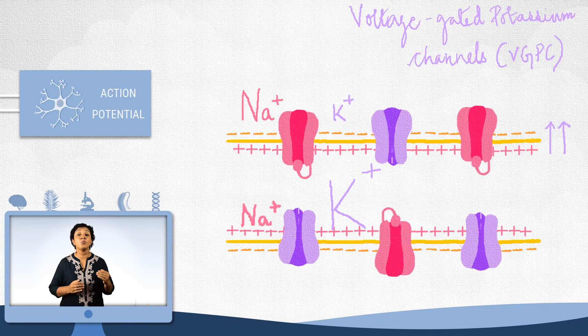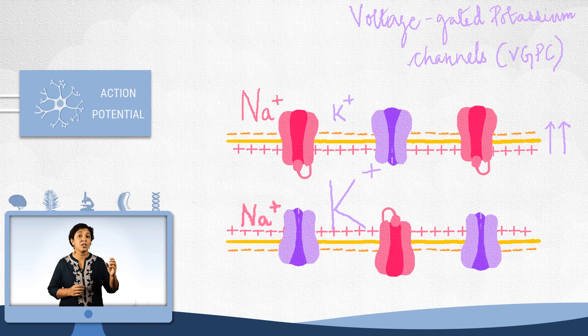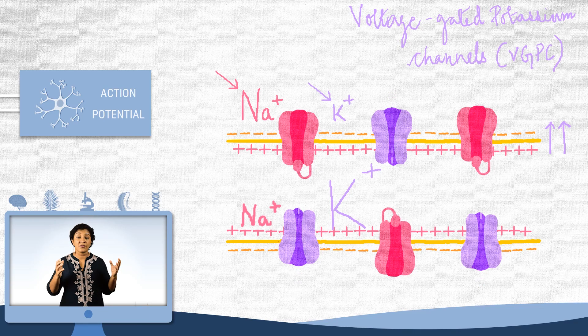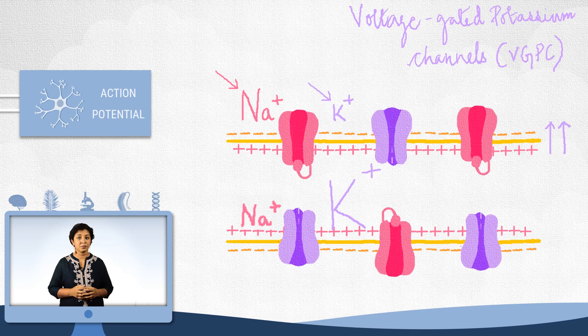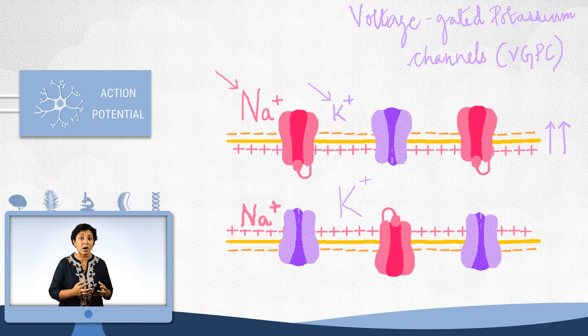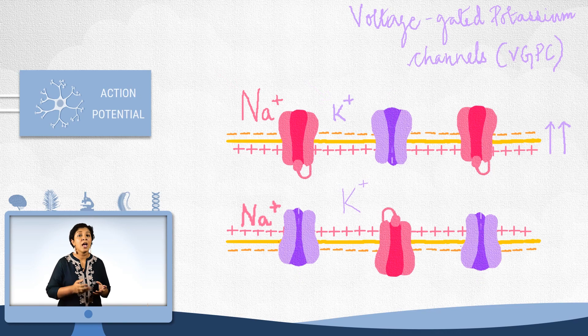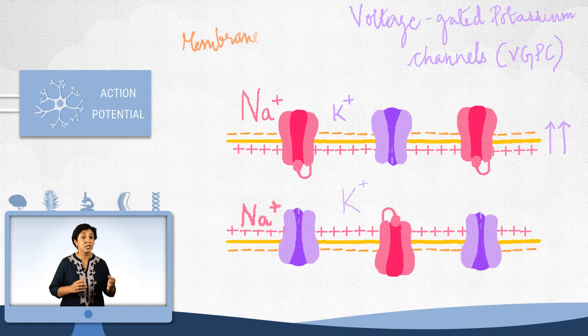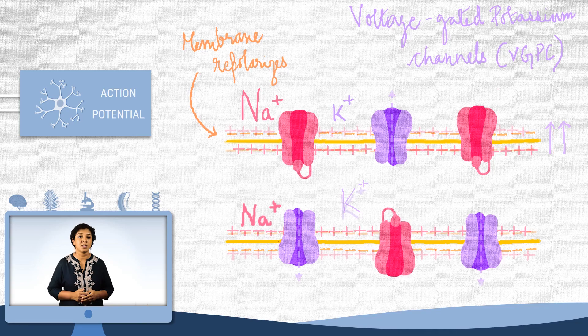Also note that the movement of ions do not change their concentration significantly in the ECF. This is because the ECF is too large for small changes in the axonal segment to affect it. But the inside is not so. Here potassium rushing out will decrease the voltage and repolarize the membrane. This is known as the repolarization stage.